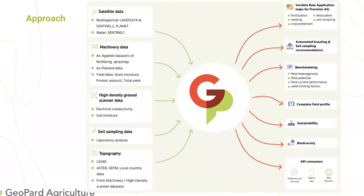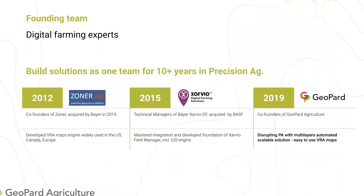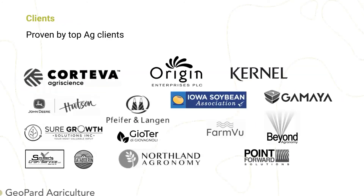We also help introduce sustainable practices. We have a very knowledgeable team and have worked in this industry for many years. Previously, it was Zoner software, known as Power Zones in Canada. Then we built Xarvio, where we built most of the spatial engine, infrastructure, and core analytics of the system. Starting from 2019, we have been building Geopard and providing analytics to various types of agribusinesses.